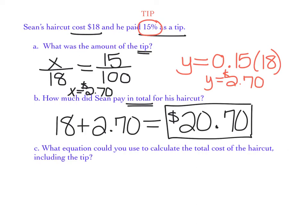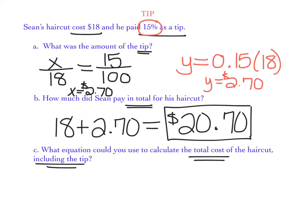Now for part C, it asks what equation could you use to calculate the total cost of the haircut including the tip. So if we need to write the equation, we want to make sure that we're using the decimal version of the tip. If I look back at part B, I see that when he paid $18, that was 100% of the cost of the haircut, plus he paid 15% as a tip. So that's 15% added on to that 100%, which means this total cost was actually 115% of the original amount.